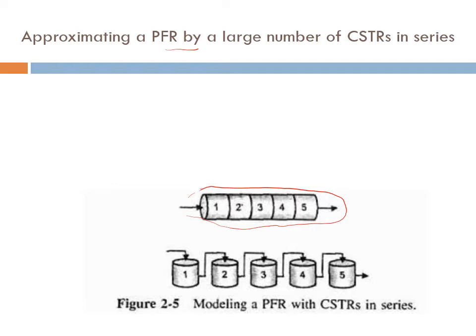Here we are looking at the physical part of the reactor — the tube itself. We said we could chop this tube into smaller segments, and every segment has an input and an output. These segments are so small that the concentration is uniform throughout, the temperature is uniform, and therefore the rate of reaction is uniform throughout the segment — which means it is well mixed, so it looks like a CSTR.